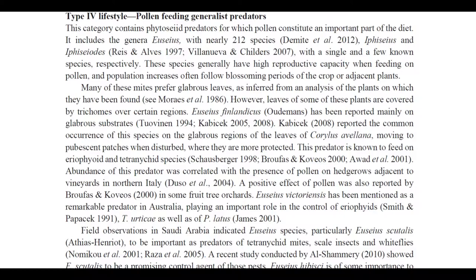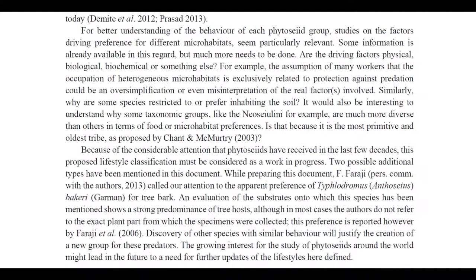The Type 4 lifestyle sees a reversal from a primarily pest or arthropod diet to a more pollen-based diet. This category contains phytoseiid predators for which pollen constitutes an important part of the diet. It includes the genera Euseius, with nearly 212 species, Iphiseius, and Iphiseiodes, with a single and a few known species respectively. These species generally have high reproductive capacity when feeding on pollen, and population increases often follow blossoming periods in the crop or adjacent plants.